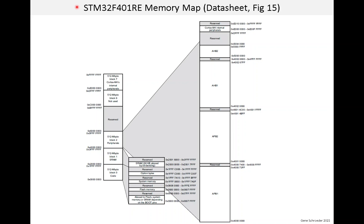Now that we understand memory mapped I/O, we're ready to look at the memory map for the MCU. This diagram, which comes from the datasheet, is a little intimidating, so we'll take it a piece at a time. First, the MCU has 32-bit addresses, so the number of bytes in the memory map is 2 to the 32nd power, which is 4 gigabytes. In hex, the maximum address would be eight Fs. The left column shows the entire address space, and certain parts are magnified in the second and third columns to give more detail. The memory map starts at 0 and goes up to 8 Fs — this is the 4 gigabytes. We can see that flash starts at 0x08000000.